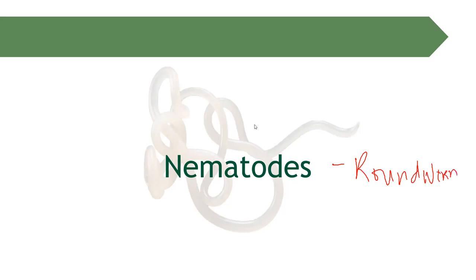When we say nematodes, these are under the phylum Nemahelminthes, and they are referred to as the roundworms. Take note that nematodes are cylindrical — that's why they are called roundworms. They are cylindrical and they are non-segmented, not like your cestodes.